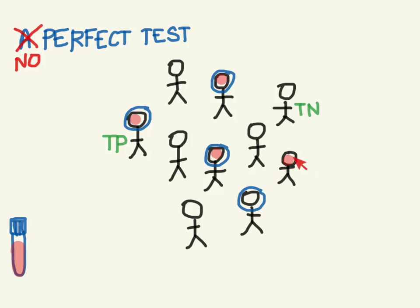What about the two cases where the test went wrong? In this one, the test was positive — that's what the blue ring is for — but the patient actually did not have the disease. So that was a false positive. And in this person, there's no blue ring — the test was negative, but it really should have been positive. So that was a false negative. These are the times when the test is wrong: our false negatives and our false positives.